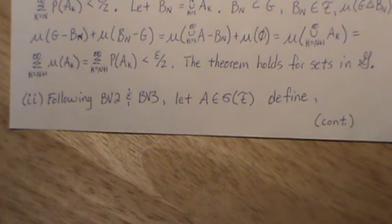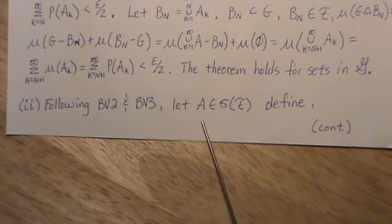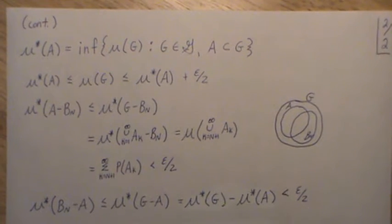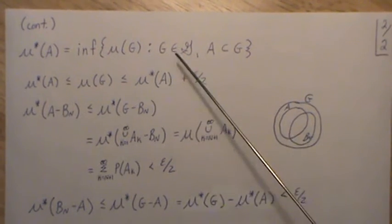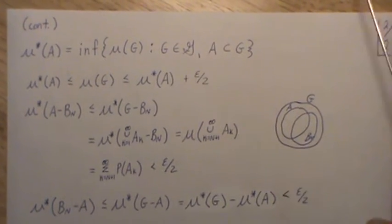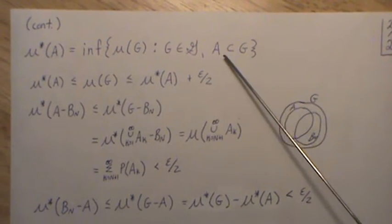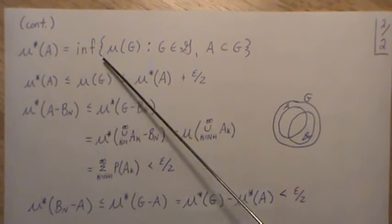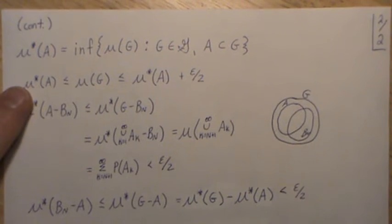So now, step two, following BV2 and BV3, let's let A be any set in the sigma field. And then we want to define this measure, call it μ*. So it's the infimum of μ(G), where G is in script G, and G is a cover of A. So A is a subset of G. And then for all Gs that satisfy this, we want the smallest. And then that's the measure of μ*.